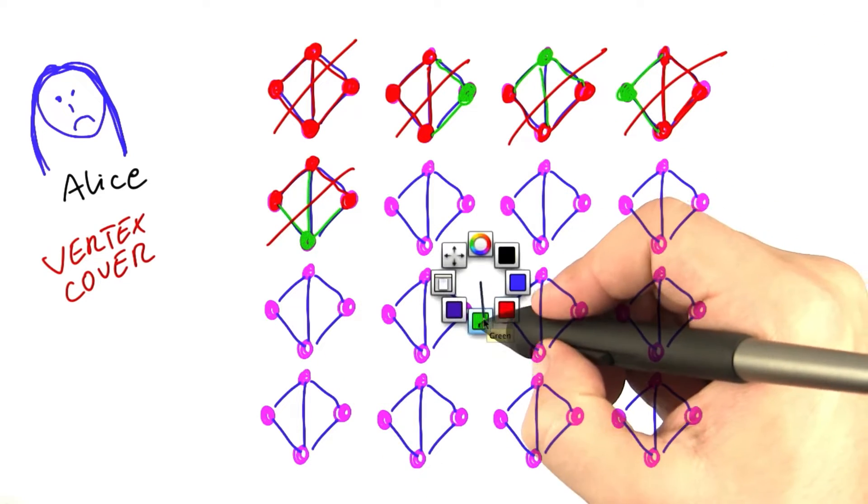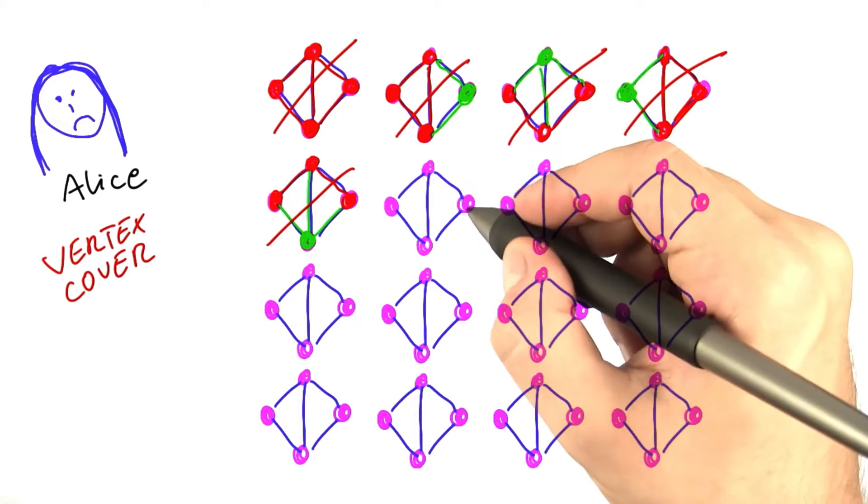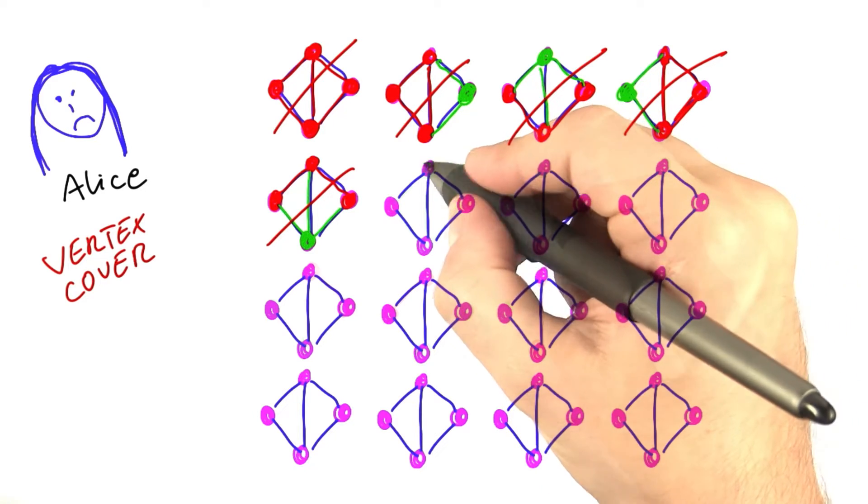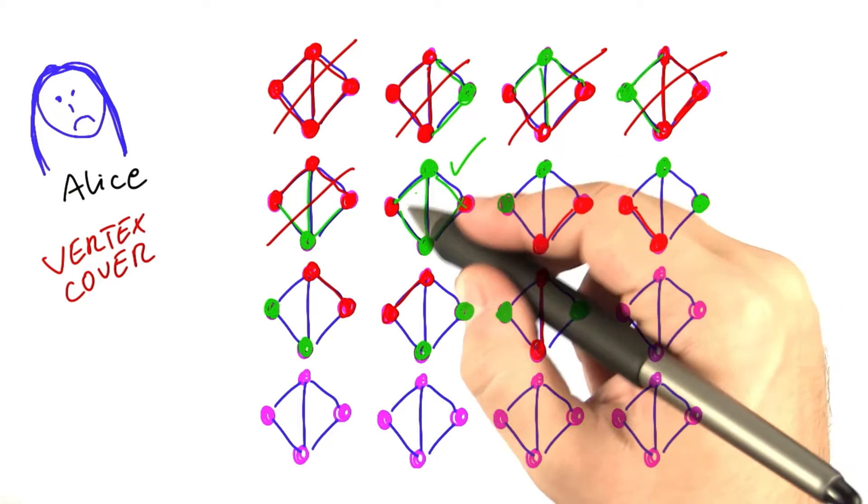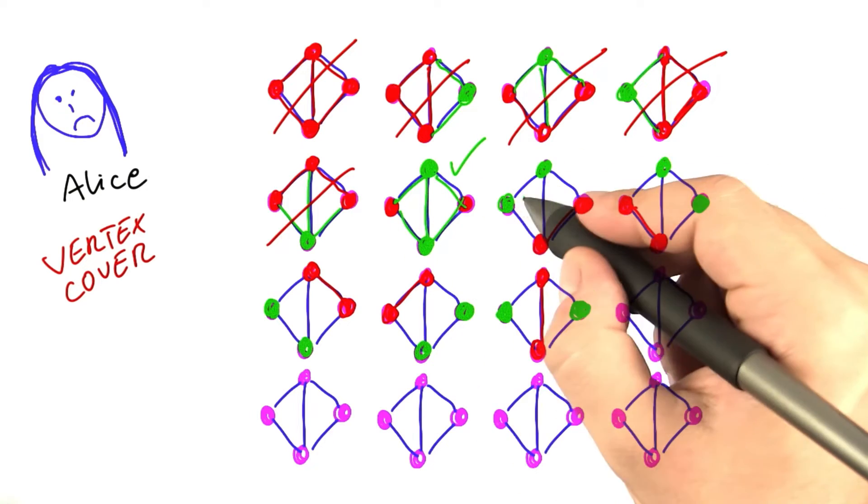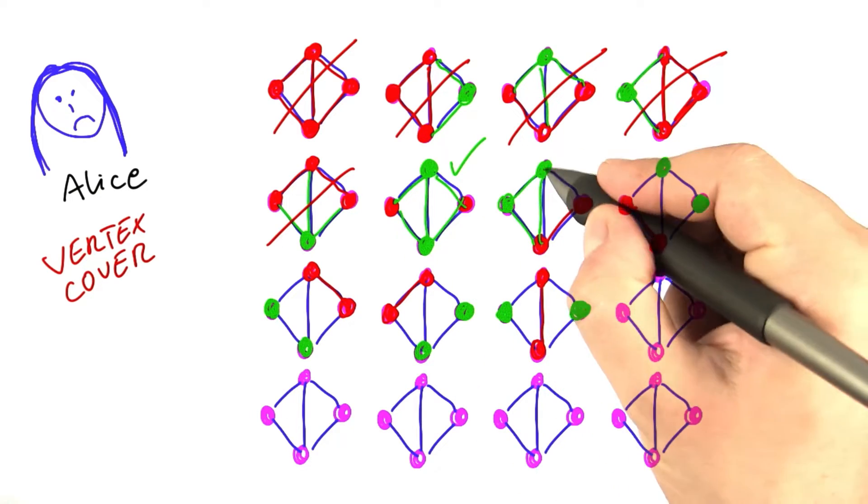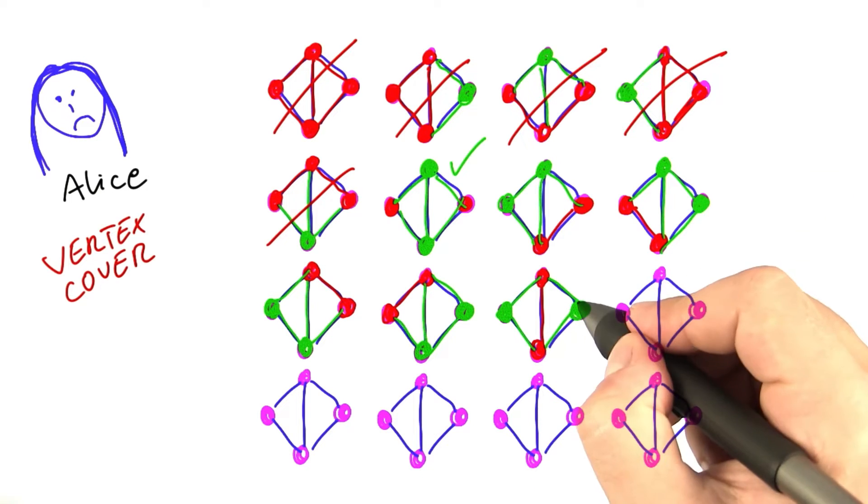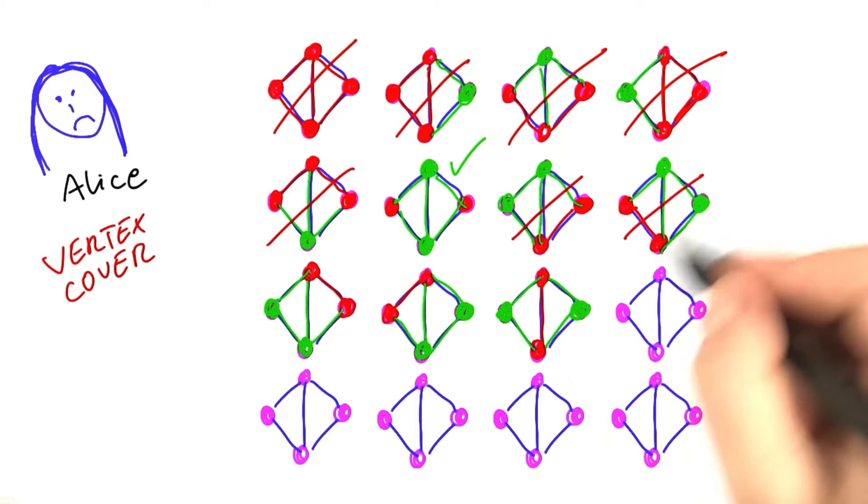So, no valid solution for any of those. The algorithm continues and says, then let's put two vertices into the VertexCover. And finally, the algorithm has found a valid VertexCover for a small network, but it has also found many VertexCovers that are actually invalid because not all edges are covered. So, again, redundant, redundant, redundant.